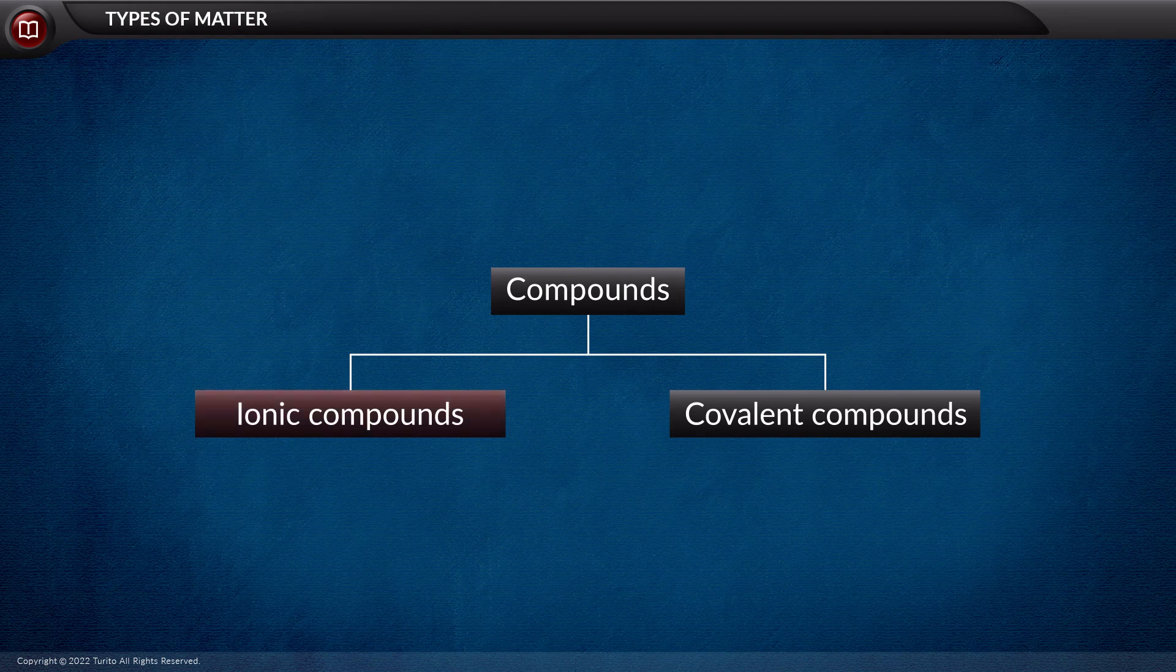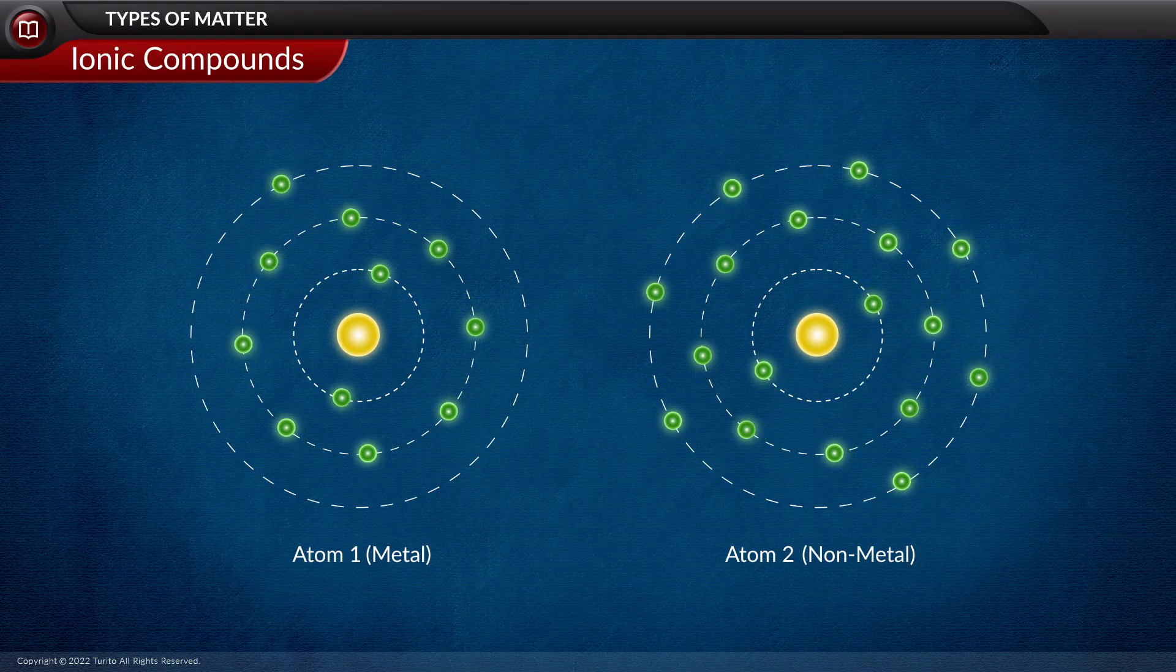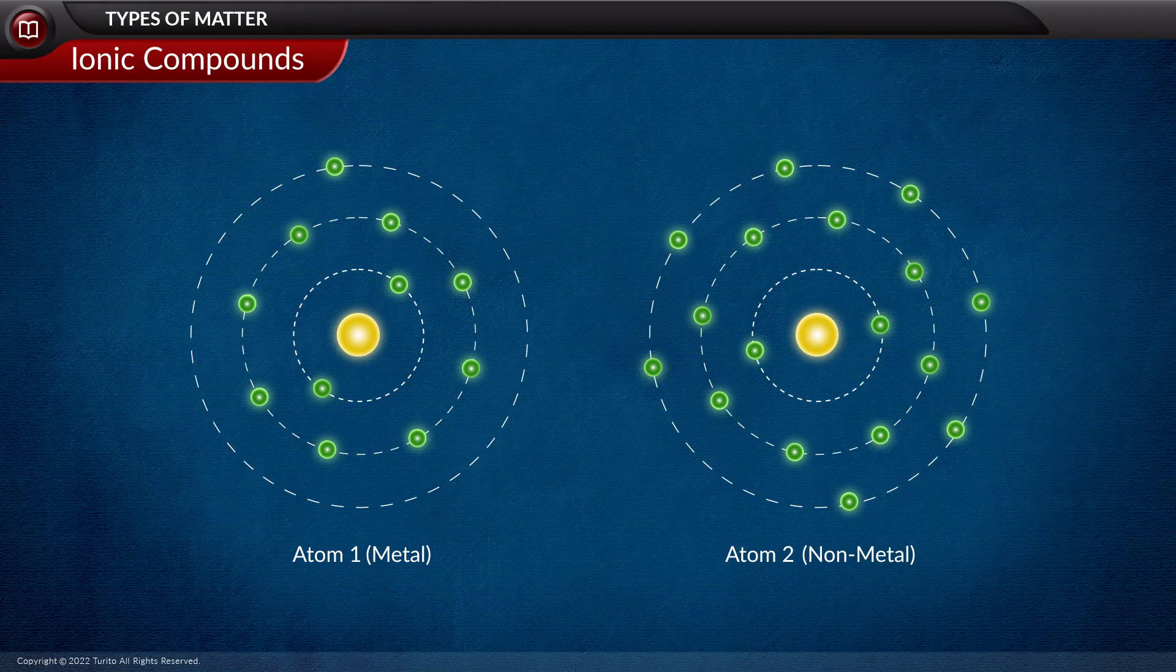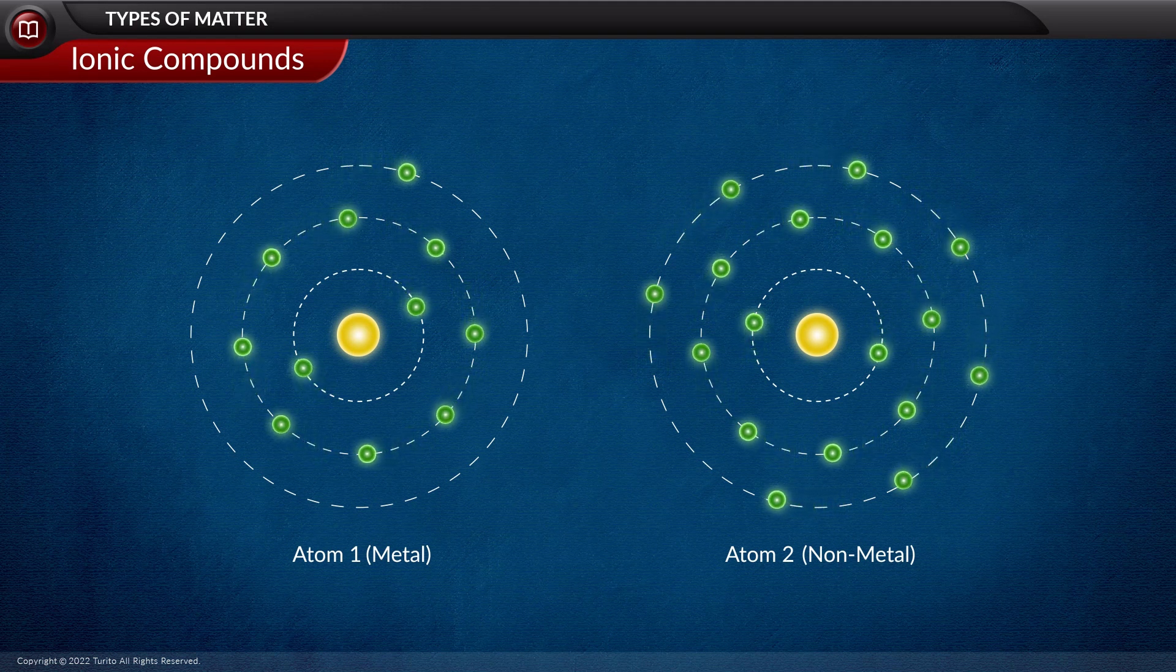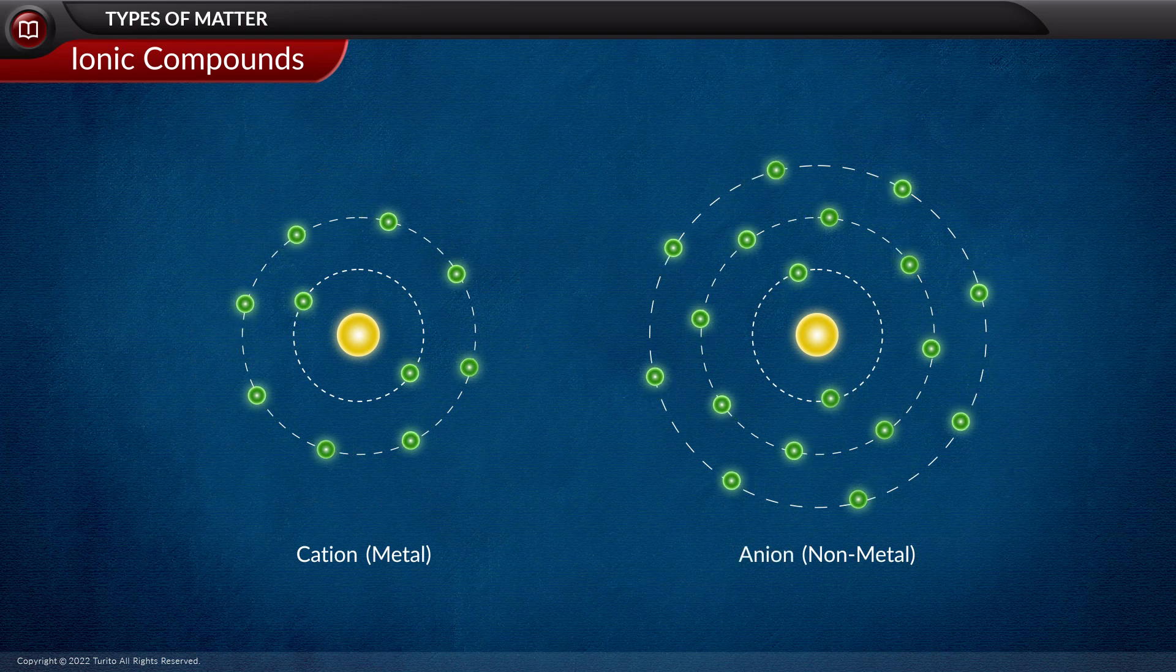Do you know what an ionic compound is? Ionic compounds are the ones that are formed by ionic interaction between the particles. These ions are formed by the transfer of outermost electrons from one element to another.